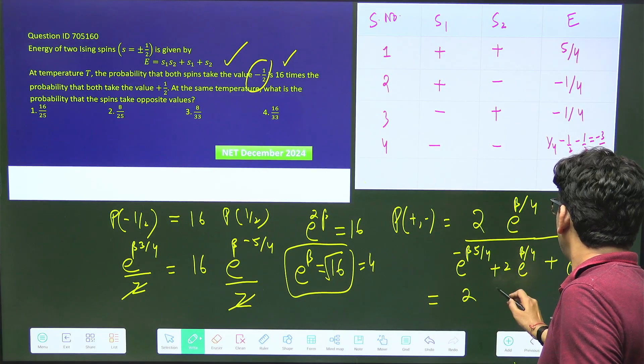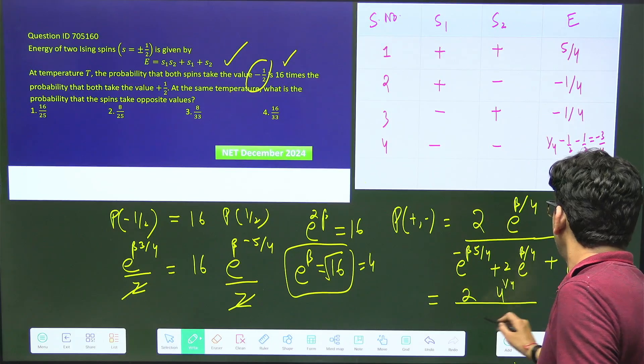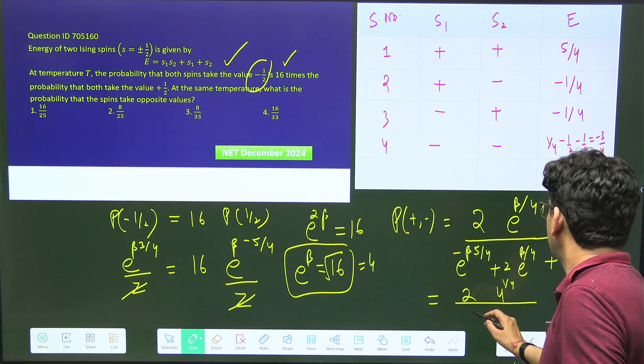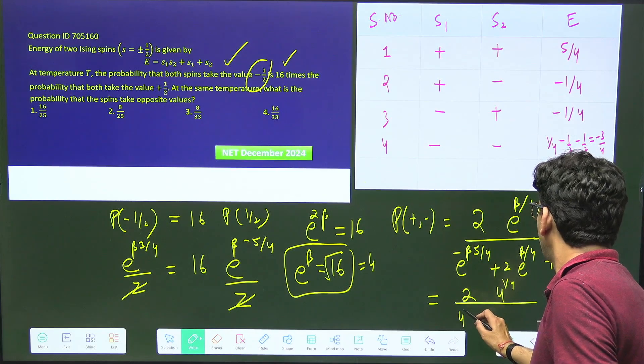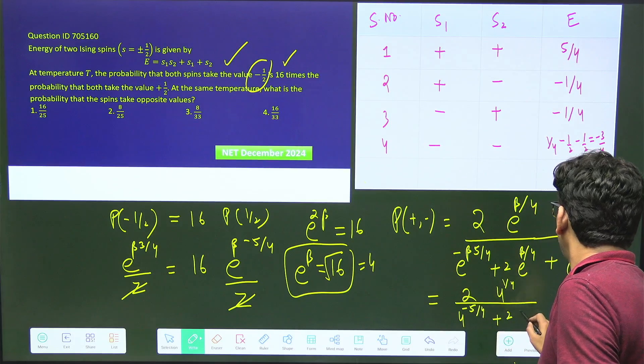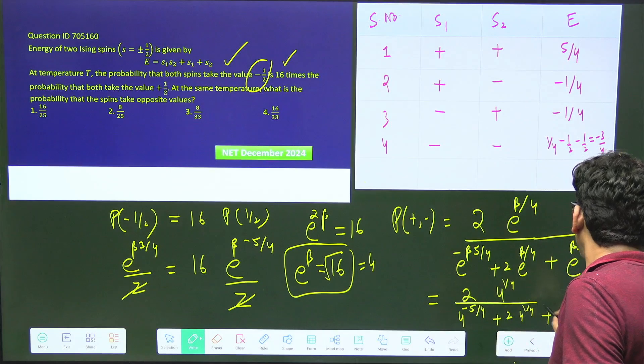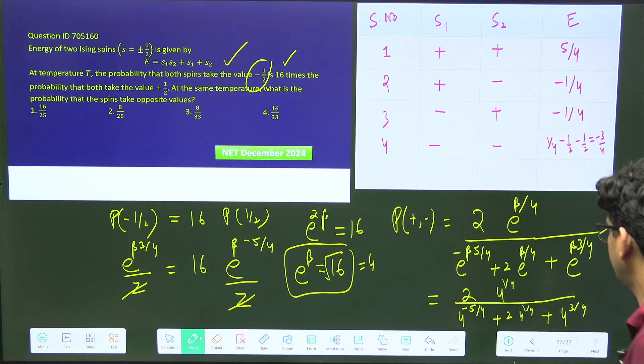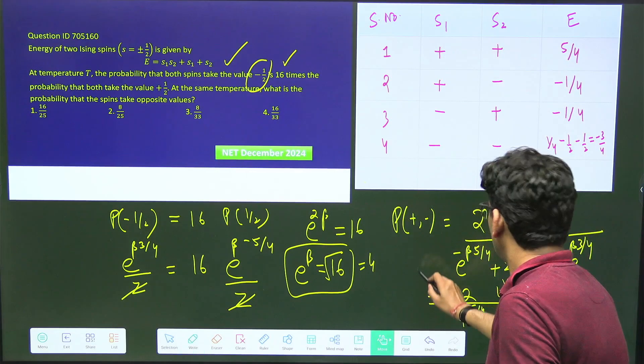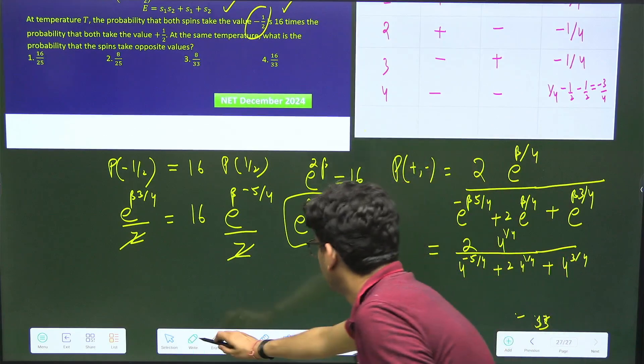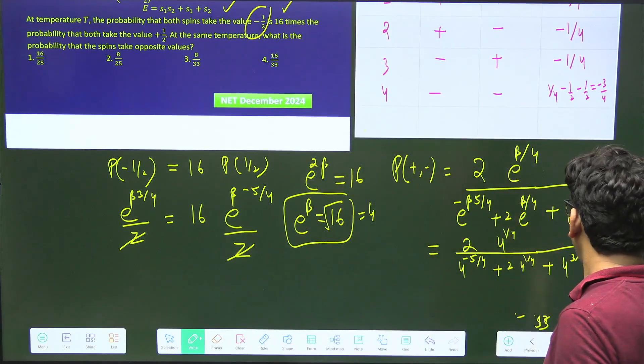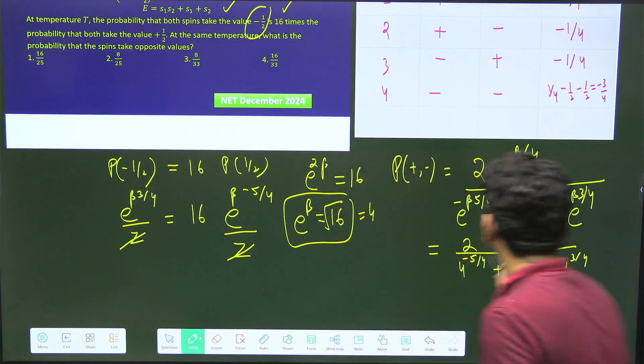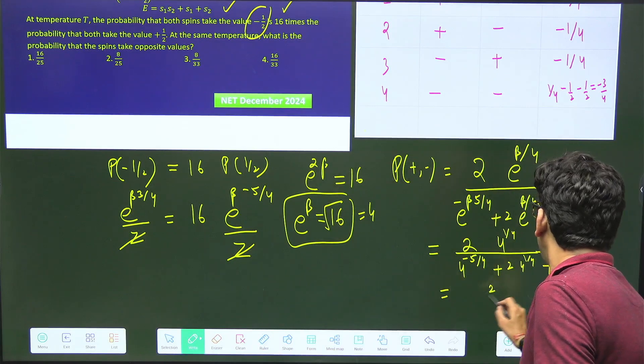I have to use e to the power 2 beta equals 16, so e to the power beta equals square root of 16, which is 4. So reuse: e to the power beta is 4, so 4 to the power 1 by 4 upon e to the power beta, which is 4 to the power minus 5 by 4 plus 2 times 4 to the power 1 by 4 plus 4 to the power 3 by 4.